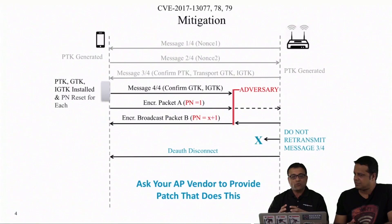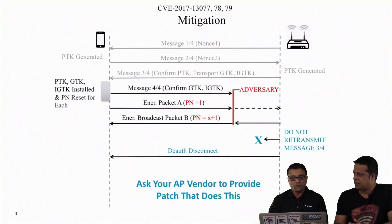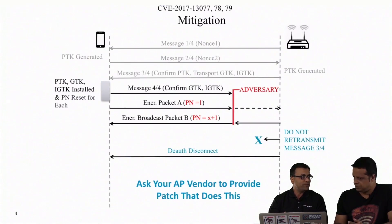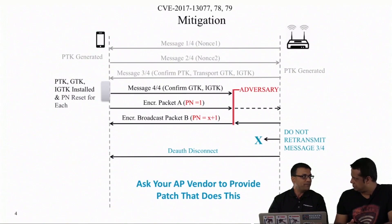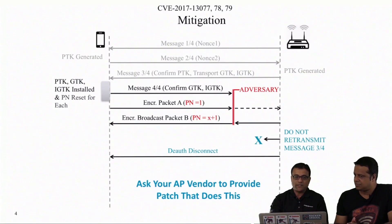That's how you fix those first three vulnerabilities, which were all about the four-way handshake — you focus on the retransmission of message 3 or 4, which was the root cause. Fix it on the client, or mitigate from the AP. The other three in the table are still client-side but involve the group handshake.